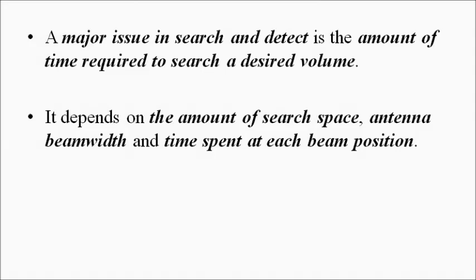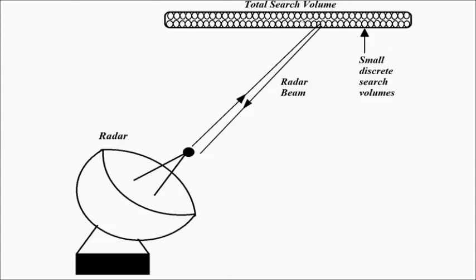One important factor here is the amount of time required to scan or search a given volume. The whole process involves dividing the whole search space. What the antenna does, depending on its size, beam width, and various other features, it divides the whole search space into several smaller discrete search volumes. In succession, in steps, in a sequence, it scans each of these small volumes after a certain period of time, which is also fixed. By that, it covers the whole search volume in sequence, one after another, so obviously it will take some time.